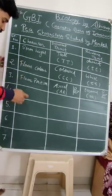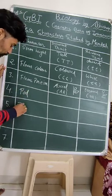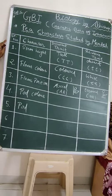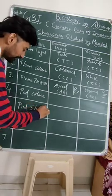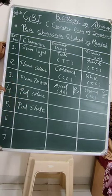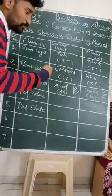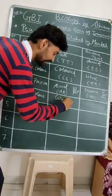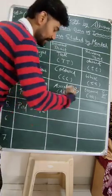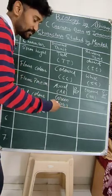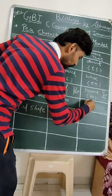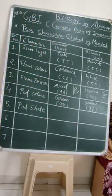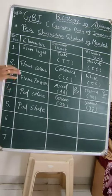After fertilization, the flower turns into a fruit, and that fruit in the pea plant is considered a pod. Our next pair of characters is pod color and pod shape. Pod color: we know that the pod is green in color, indicated as capital G capital G. After ripening, the fruit becomes yellow in most cases, so yellow pod is the recessive trait, denoted as small g small g.